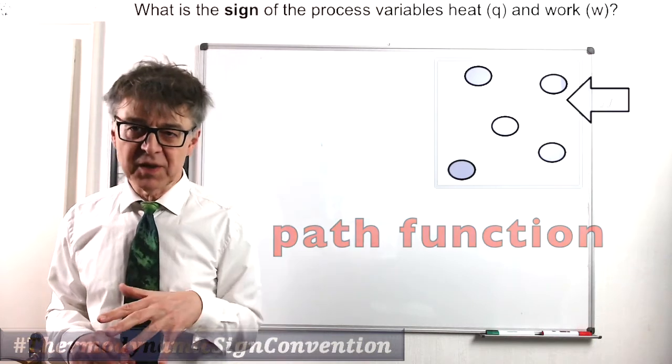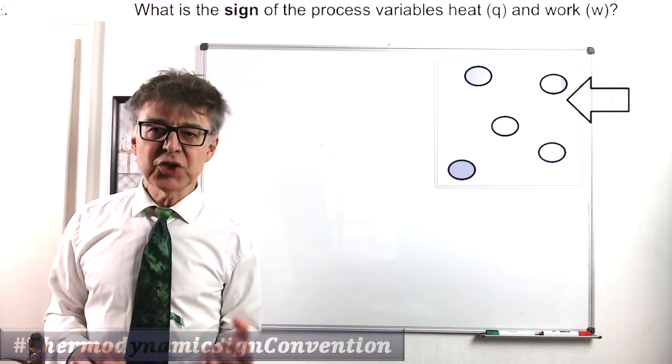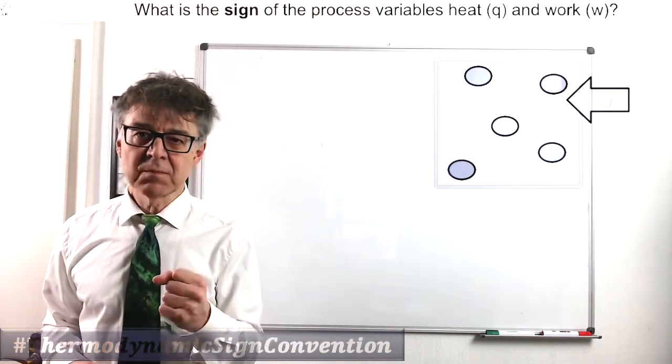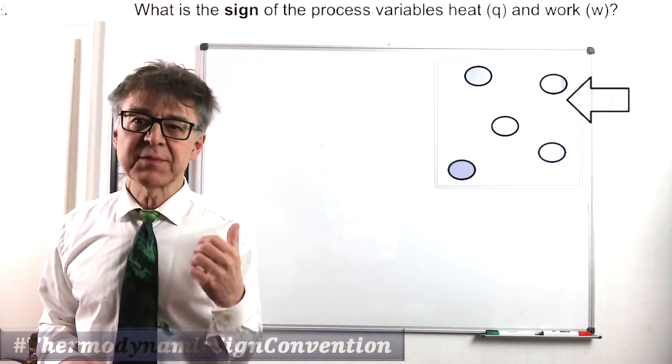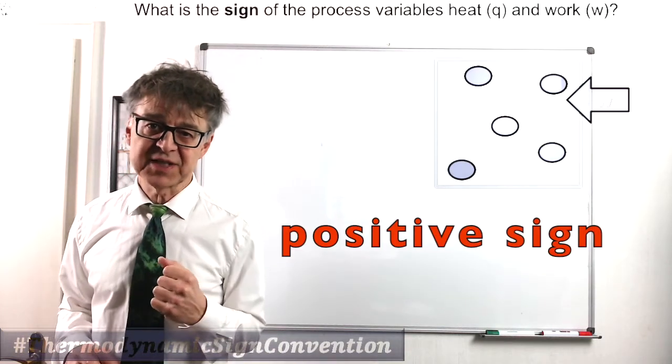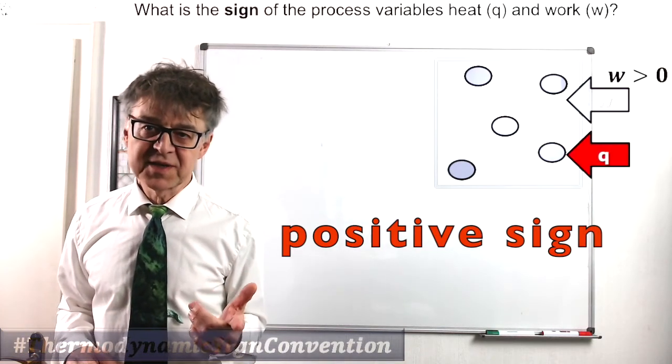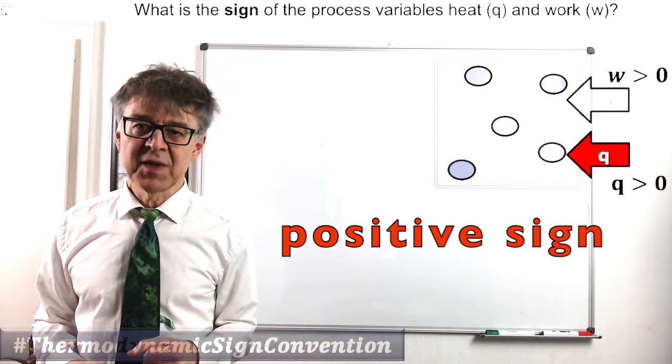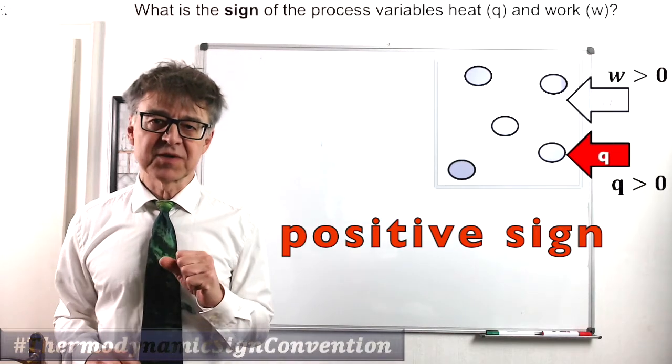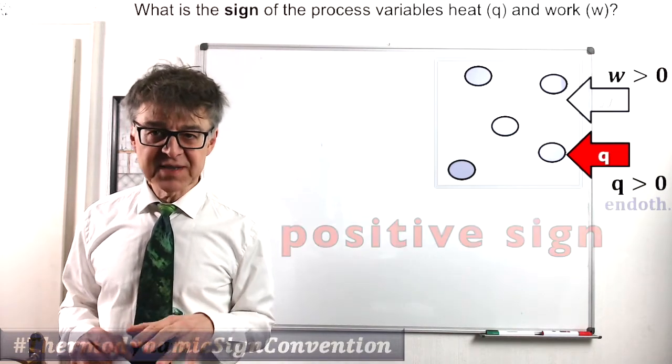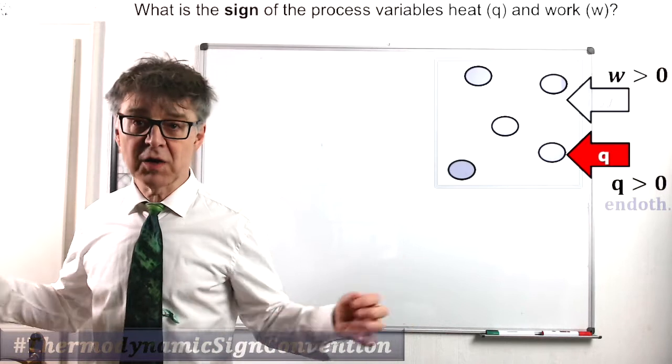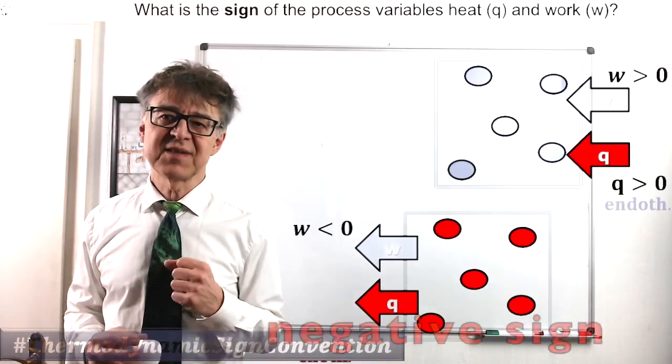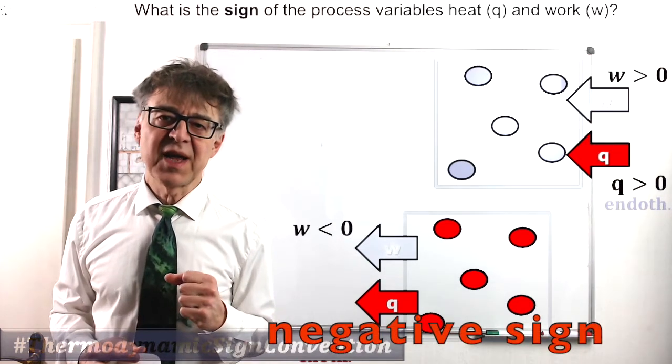When work is done on a system, there is energy input from the surroundings into the system. And it looks like this. Then the path function work has a positive sign, W greater than zero. The same holds for heat. When a system absorbs heat, the heat has a positive sign. This is by the way called an endothermic process. In the opposite case, the system may submit work or release heat to the surroundings, W less than zero, Q less than zero, also called an exothermic process.